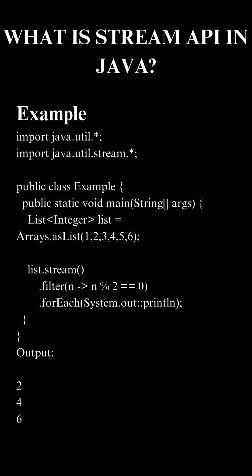Here in the example, the Stream API processes data in a functional style. The stream filters even numbers using a lambda expression function, and for each prints the results. So no loops are needed.